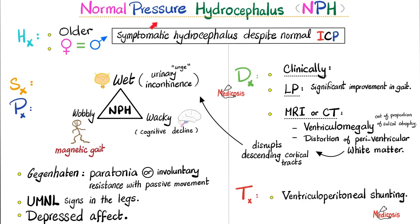NPH, or Normal Pressure Hydrocephalus, is more common in older patients — you'll see it in patients in their 70s, 80s, 90s. It is sex-congruent, meaning it's equally likely in females as in males. Symptoms and physical exam findings include a classic clinical triad of three Ws: I am wet, I am wobbly, I am wacky.